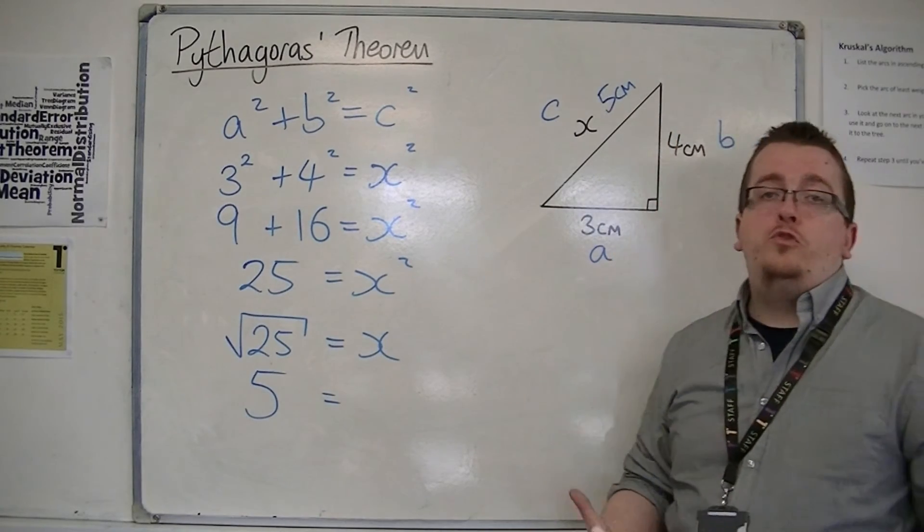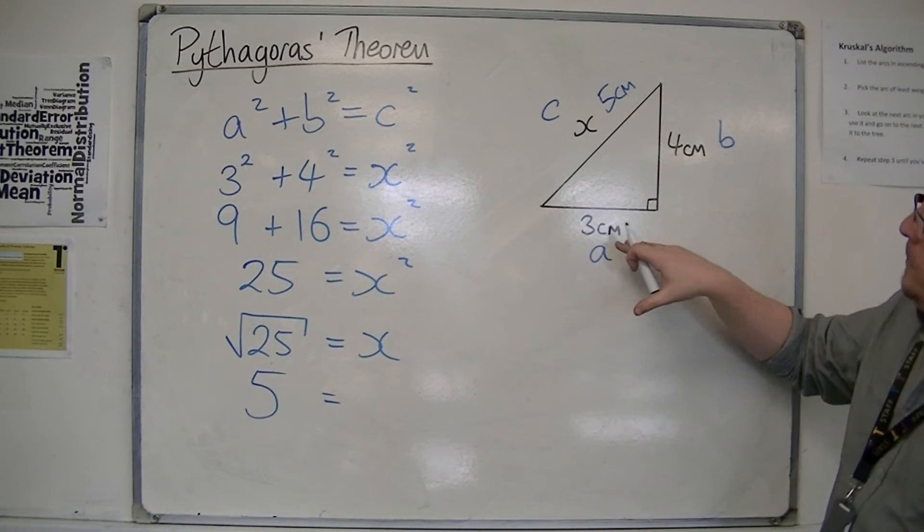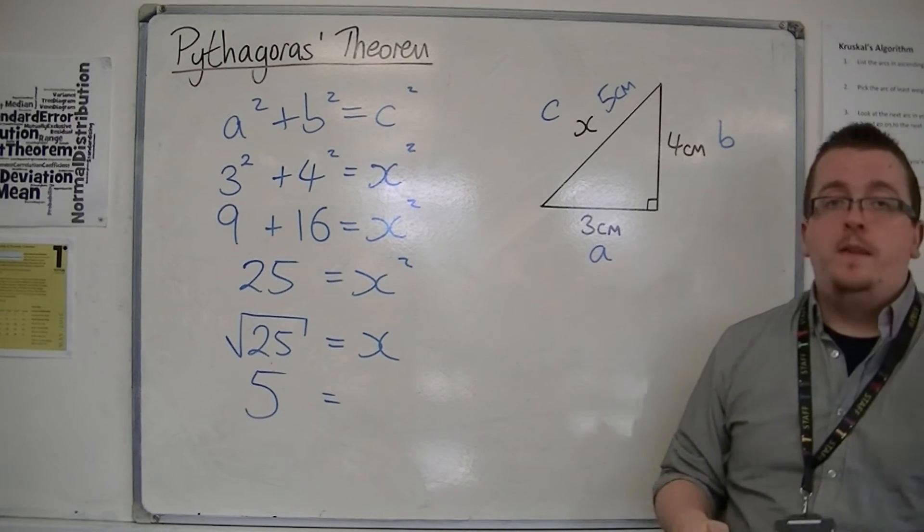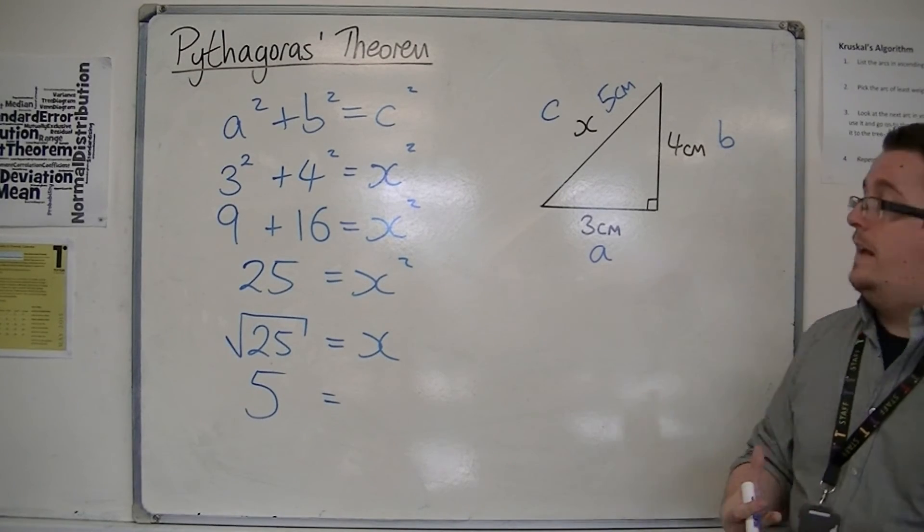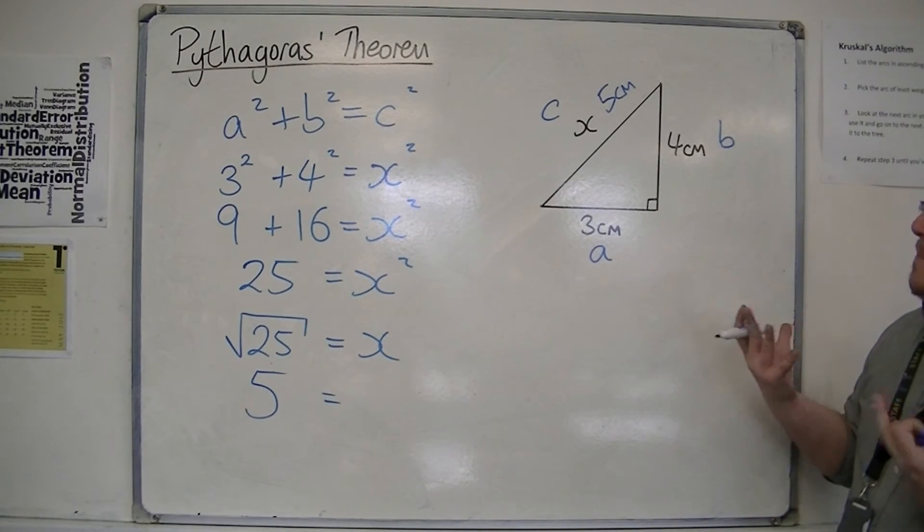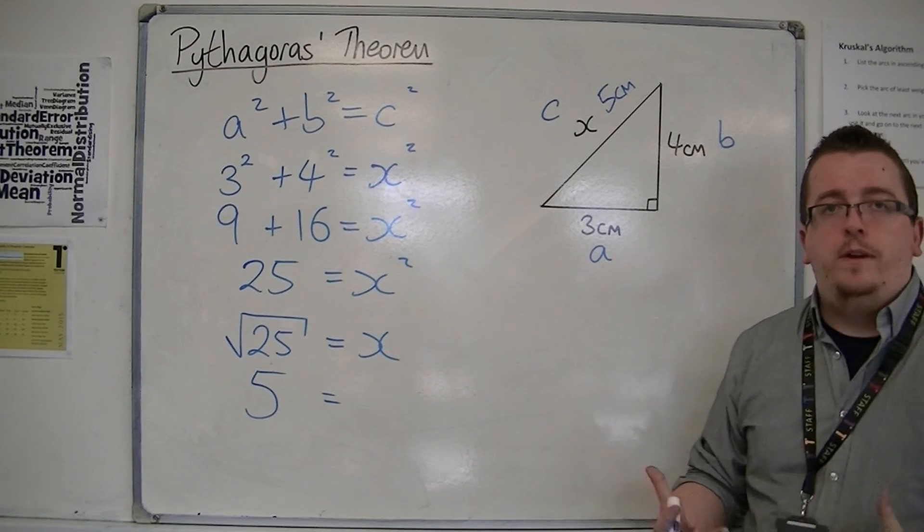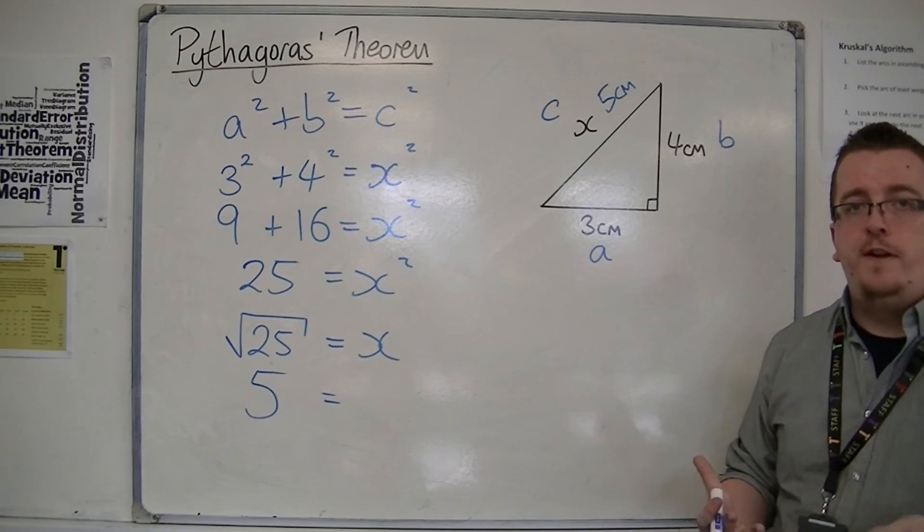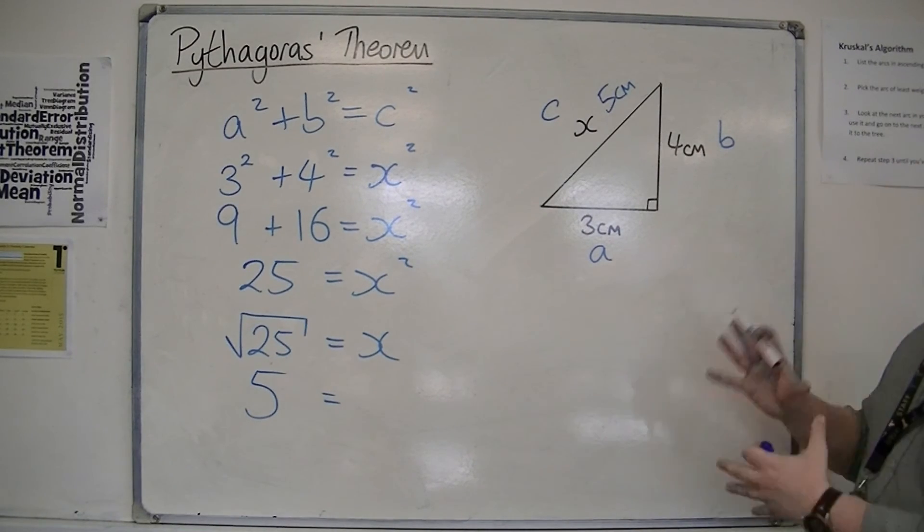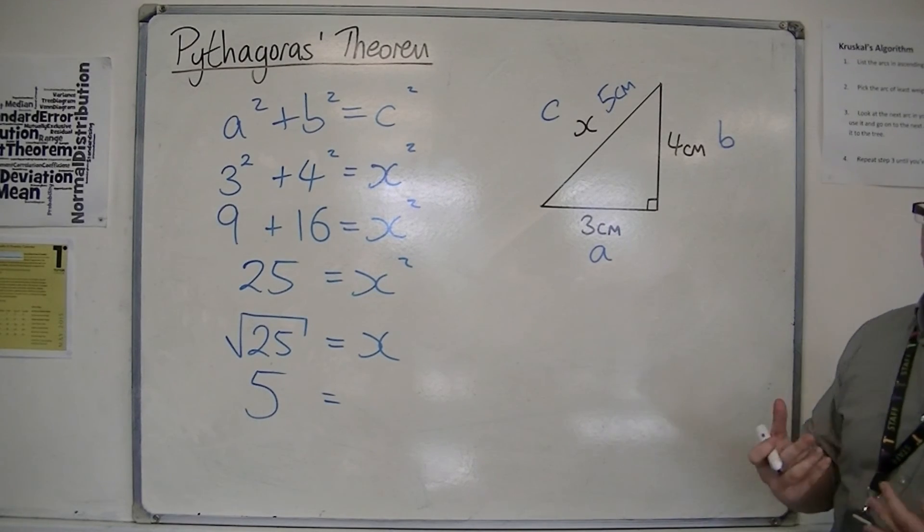And this is one of those special triangles. This is sometimes called a 3-4-5 triangle. Okay, and it's recognized as a Pythagorean triple, as it's called, 3-4-5. The sides of a right-angled triangle that are whole numbers.